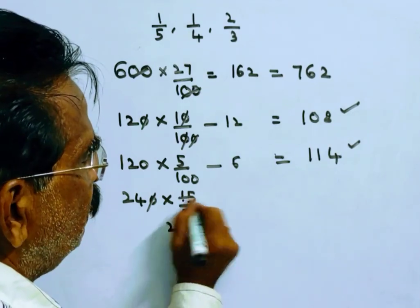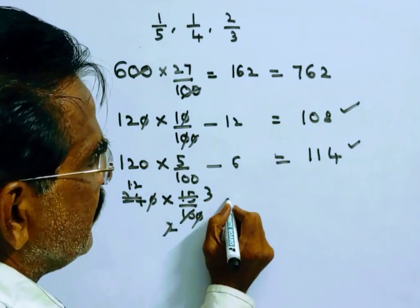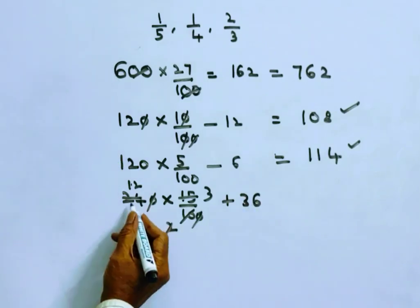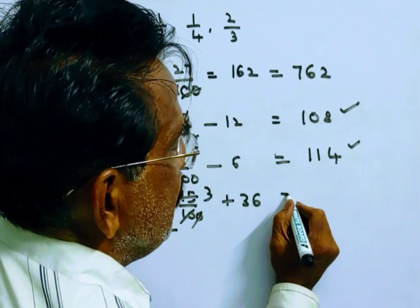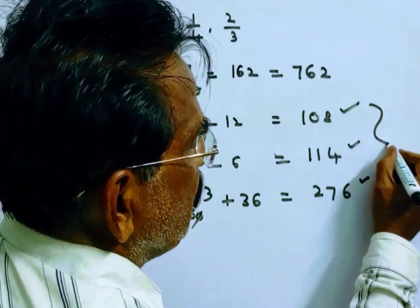5 times 2, 5 times 3, 2 times 12, 12 times 3 equals 36. So I am adding, this is profit, so 240 plus 36 equals 276. So these 3 amounts he realized.